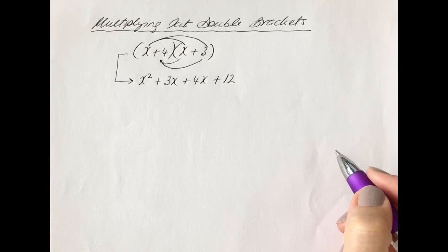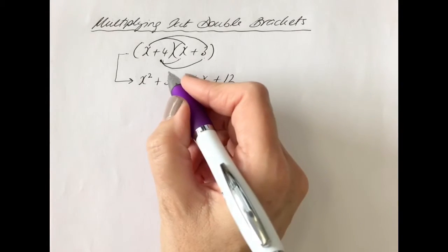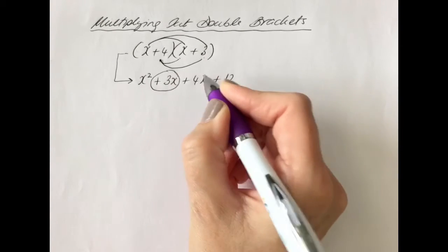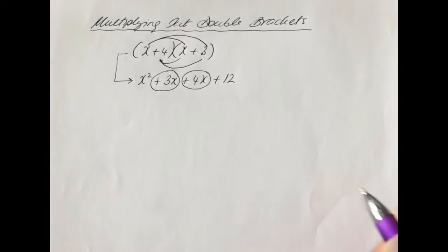Now we're not quite finished. To get our final answer, we can simplify this further. That means we can add together the terms that are the same, and the two terms that are the same here are plus 3x and plus 4x.